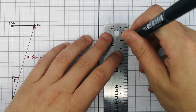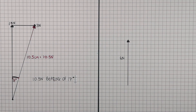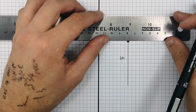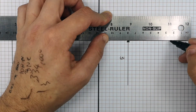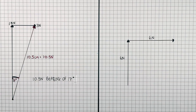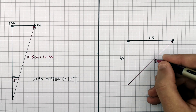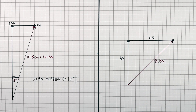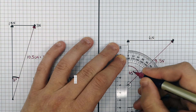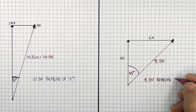In this example, the force acting in a northern direction is six Newtons, so we draw a six centimeter line. The force acting in an eastern direction is also six Newtons, so that line is also six centimeters. We draw them tip to tail. The resultant force measures 8.5 centimeters, giving a magnitude of 8.5 Newtons. Using a protractor, the direction is 45 degrees, so the resultant force is 8.5 Newtons with a bearing of 45 degrees.